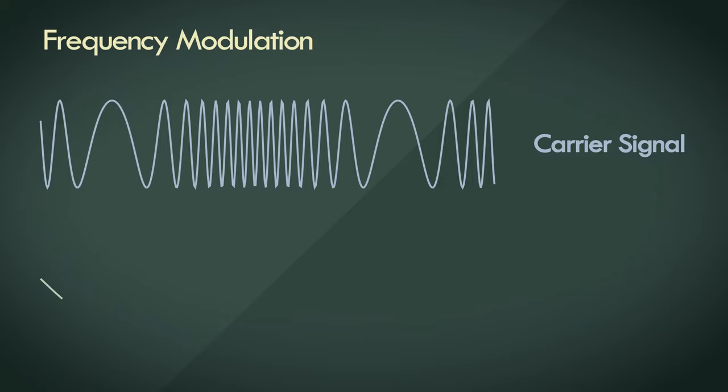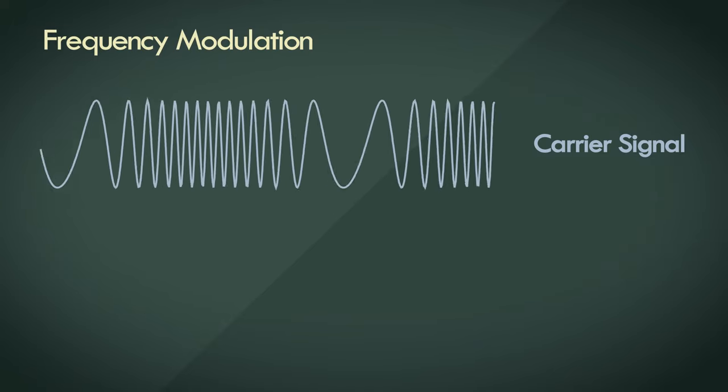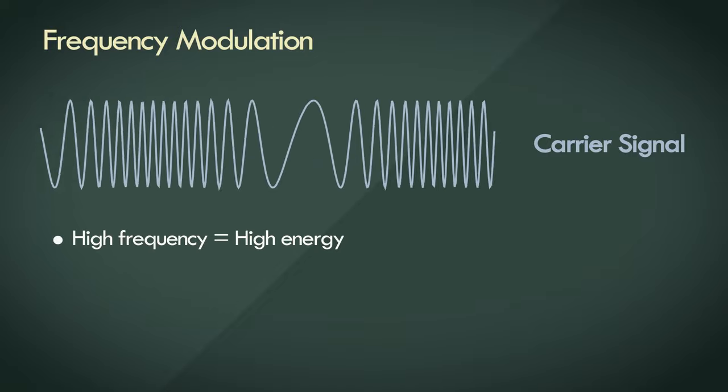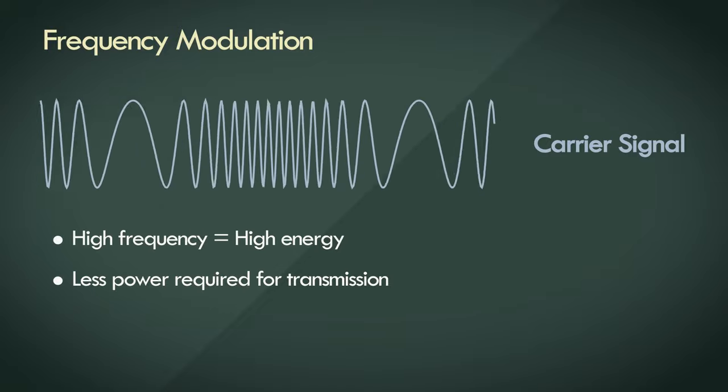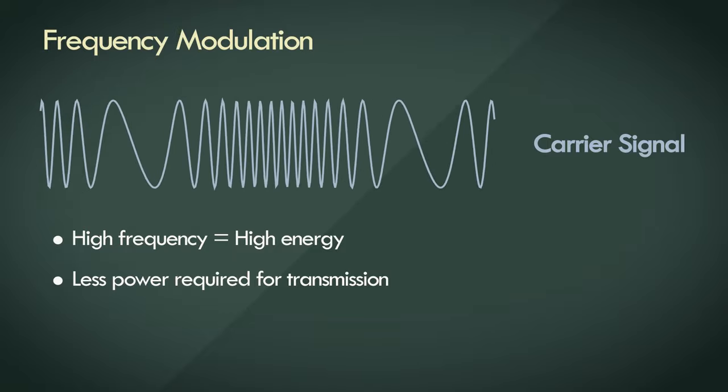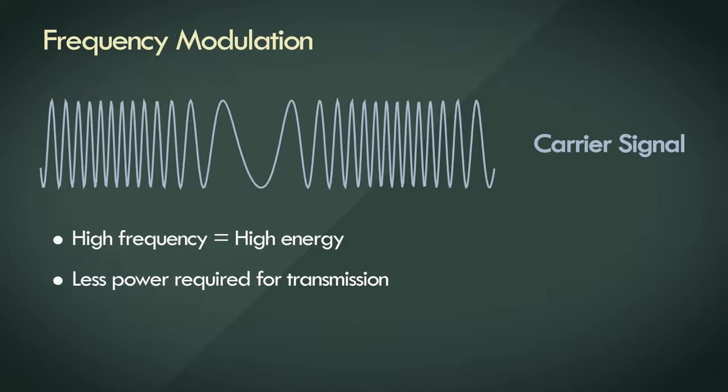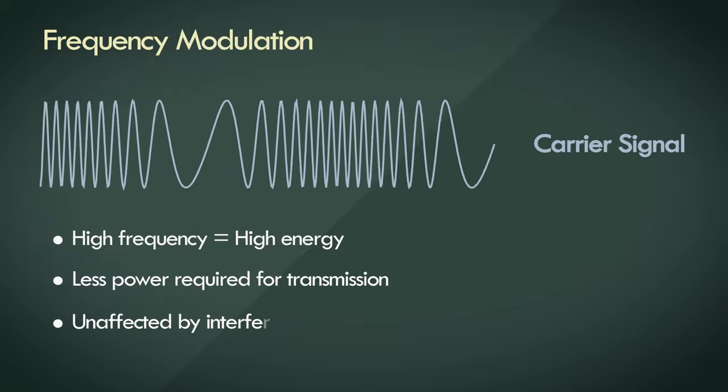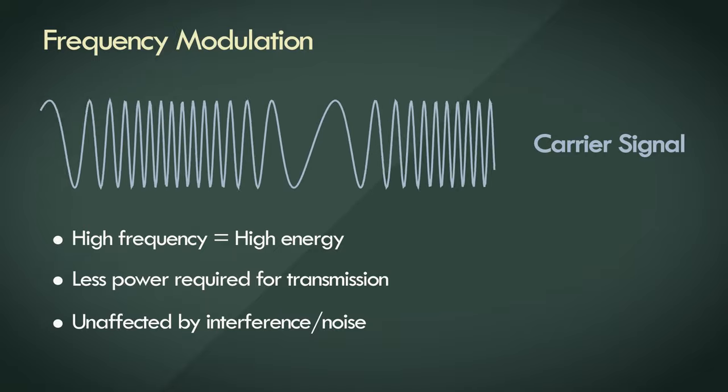The carrier signal has loads of advantages during transmission. Since it has a very high base frequency, it has a lot of energy and can be transmitted at larger distances with little amplification. And since the music is encoded within the frequency of the carrier, and since interference noise only affects the amplitude, the underlying music is unaffected by environmental noise.